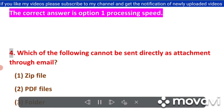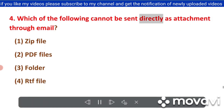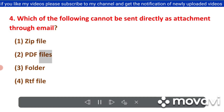Question 4: Which of the following cannot be sent directly as an attachment through email? — 1. ZIP File, 2. PDF Files, 3. Folder, 4. RTF File. The correct answer is Option 3: Folder.